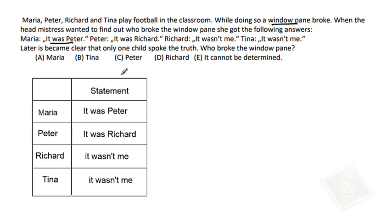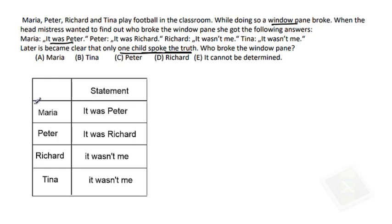Now later on it became very clear that only one child spoke the truth. So it means one person is speaking truth and three people are lying. But we do not know who speaks truth out of these four. Based on the statements, we need to find who broke the glass. We will solve this by method of contradiction — we assume one by one that each kid is correct.